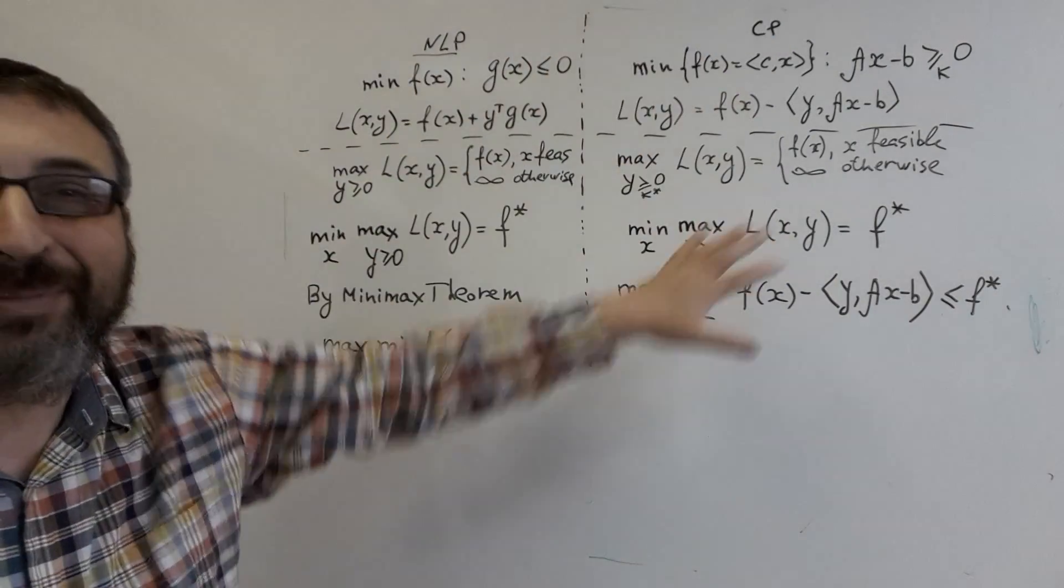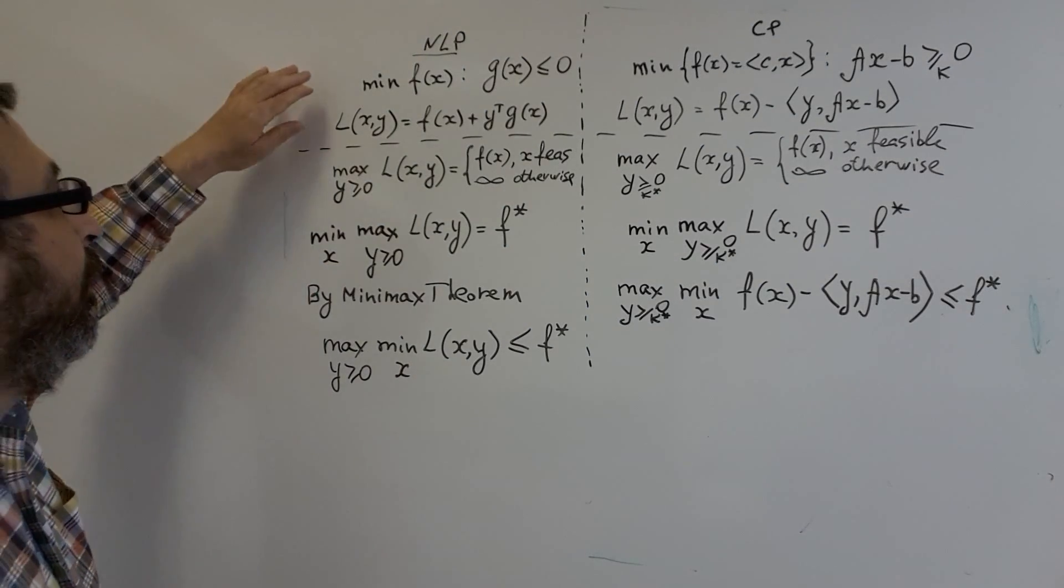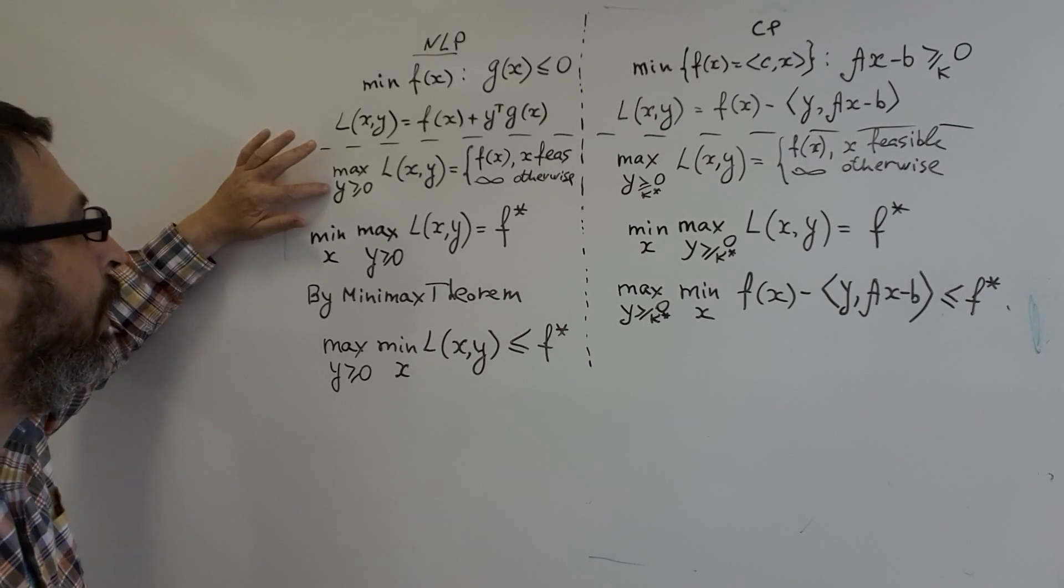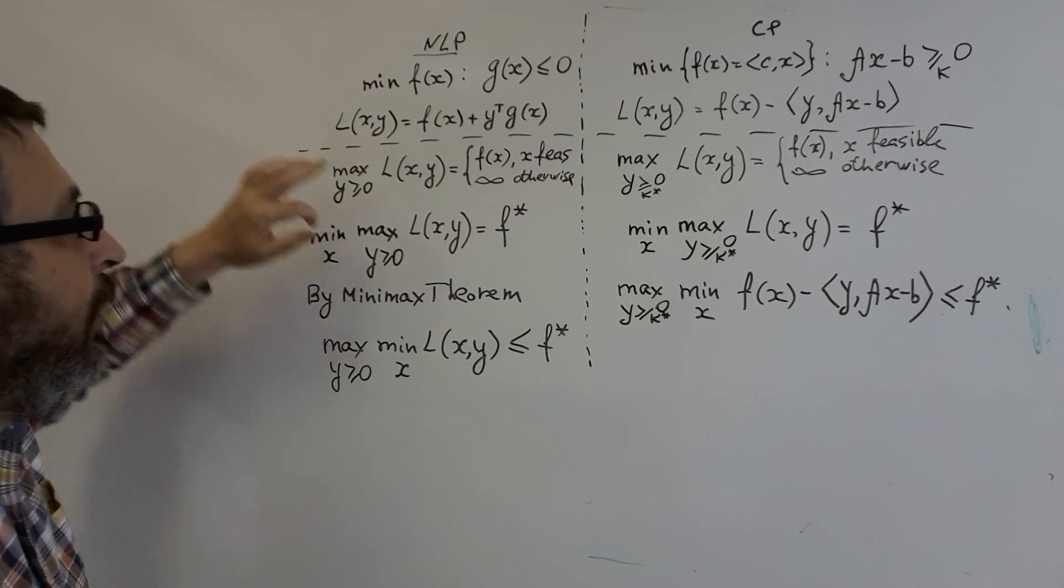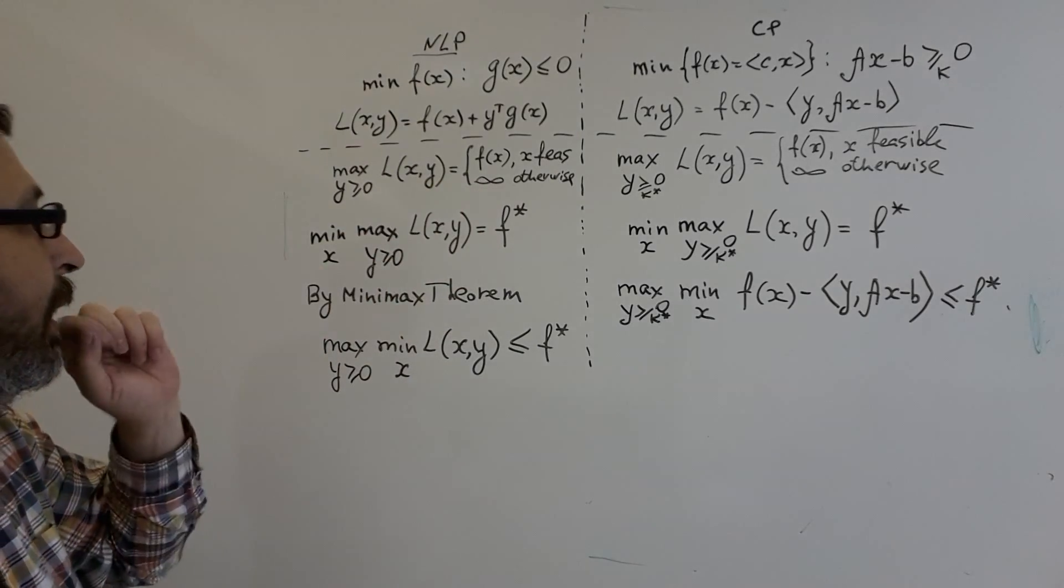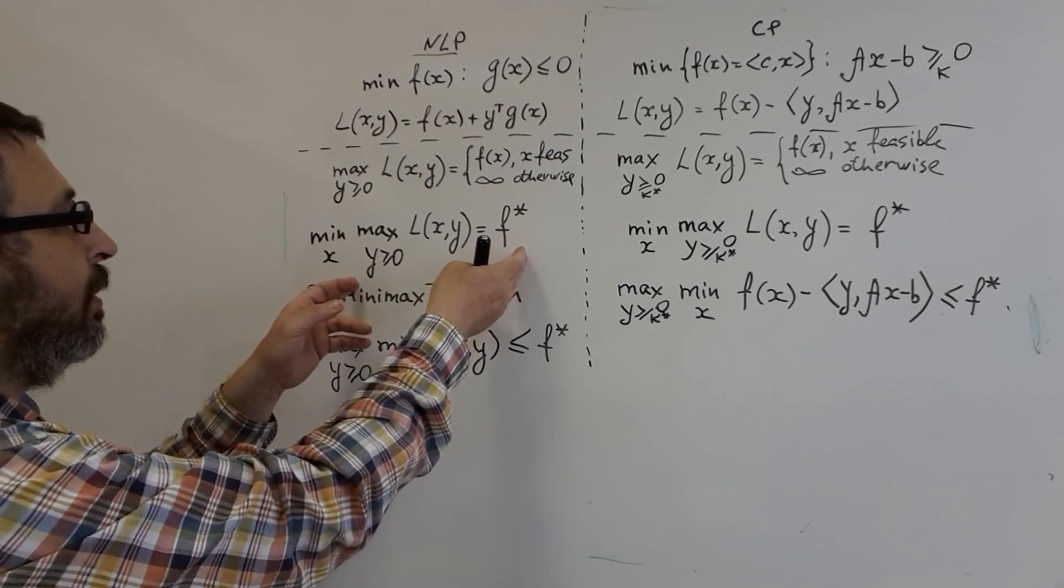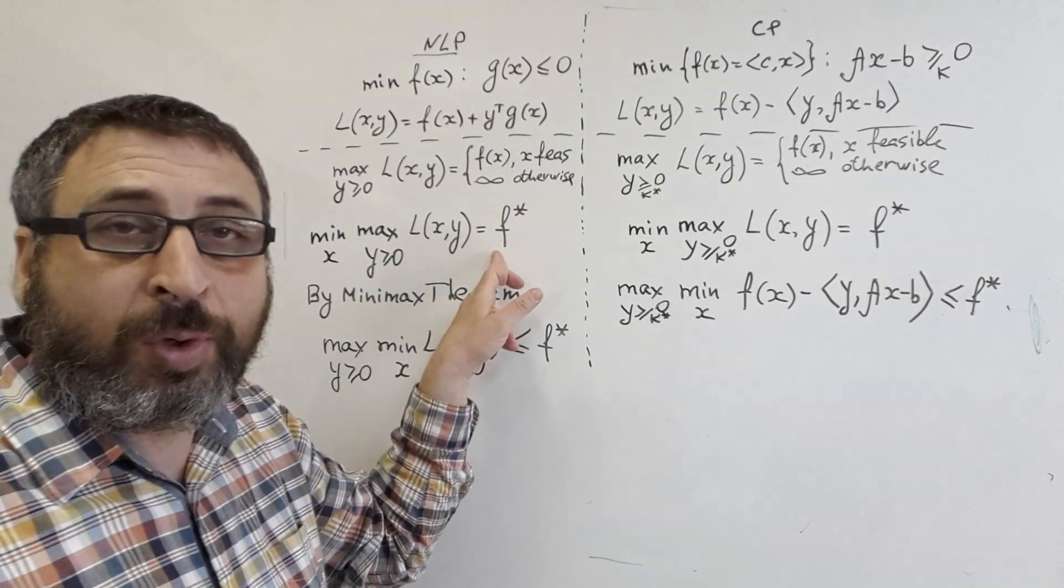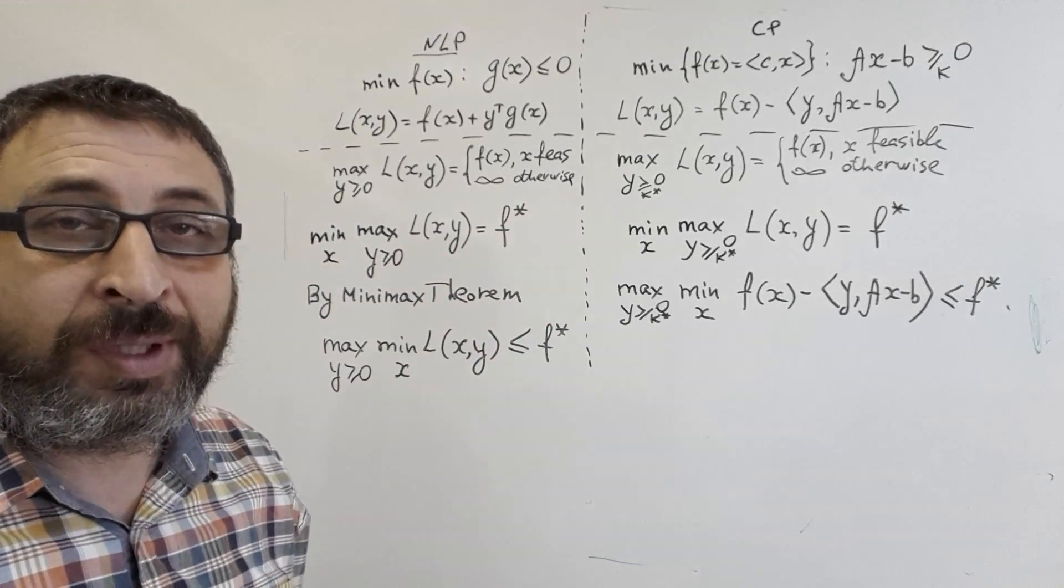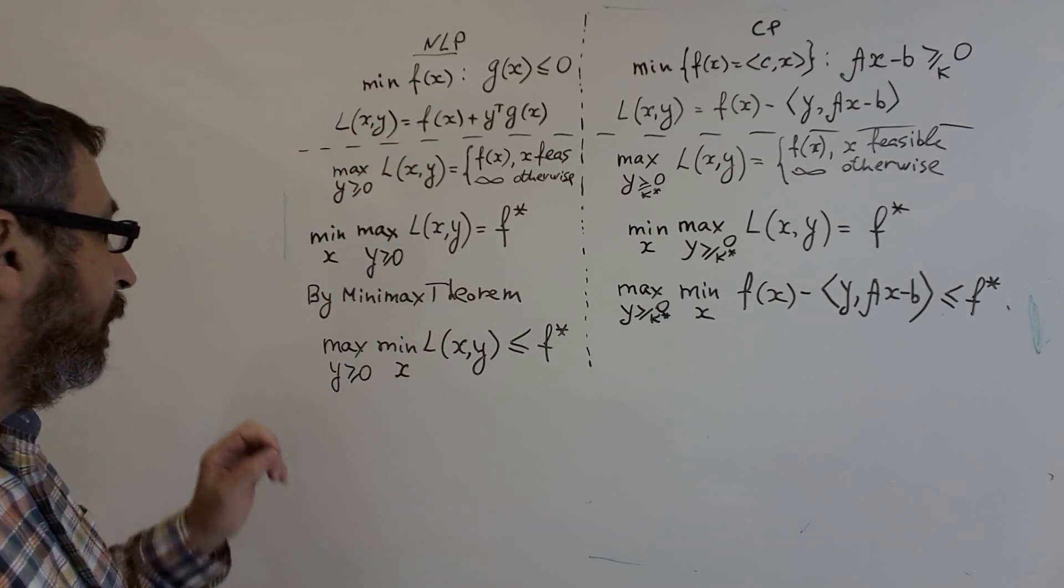I will summarize here what we already told. We got to the conclusion that maximum over Y of Lagrangian is ideal barrier aggregate. It means that if we minimize this function over X, we should get solution to our problem, and the value would be optimal value of objective function, the optimal solution of the original problem.